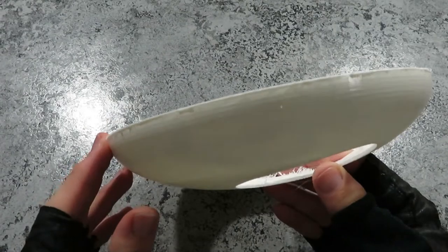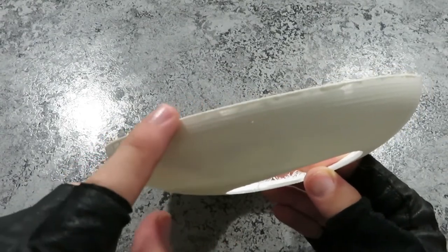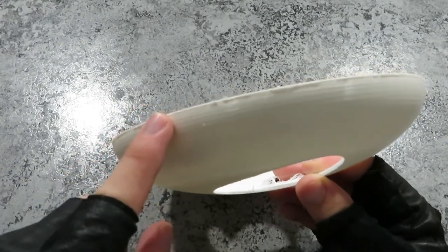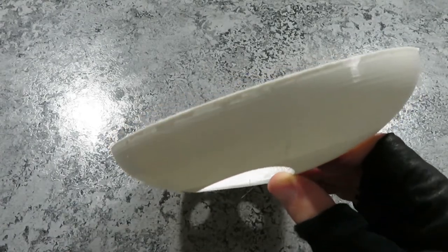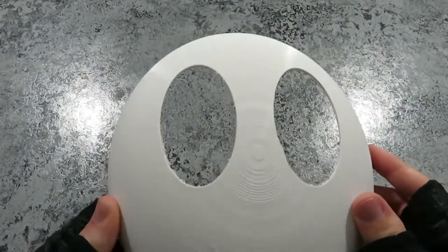Use your lower grit sandpaper for removing the majority of plastic, and your higher grit as more of a finisher to smooth your mask. Be sure to sand somewhere you're not too worried about covering in dust. Outside is always a good choice.